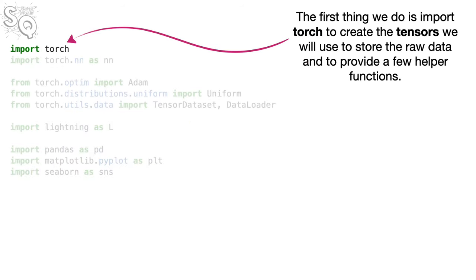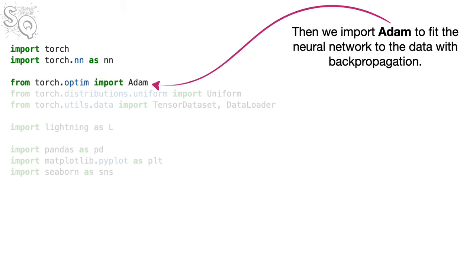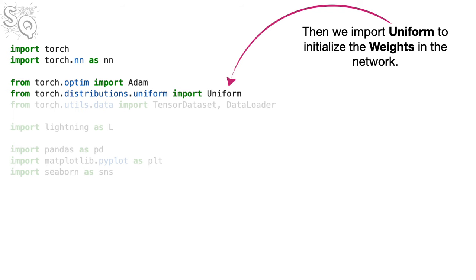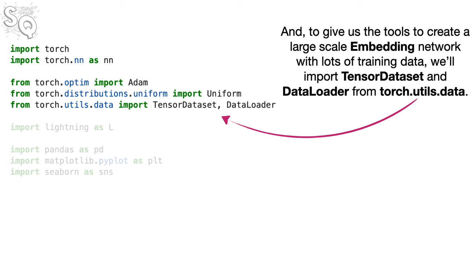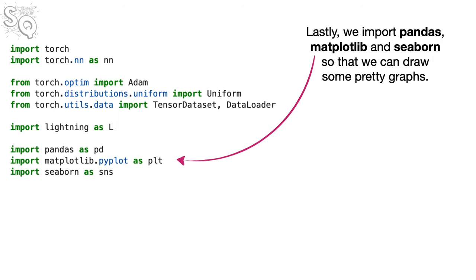The first thing we do is import Torch to create the tensors and provide helper functions. Then we import Torch.nn for network weights and helper functions. Then we import Adam for backpropagation, and Uniform to initialize the weights. To handle large-scale data, we import TensorDataset and DataLoader from Torch.utils.data. We also import Lightning as L for code optimization and cloud scaling. Lastly, we import Pandas, Matplotlib, and Seaborn for graphs.